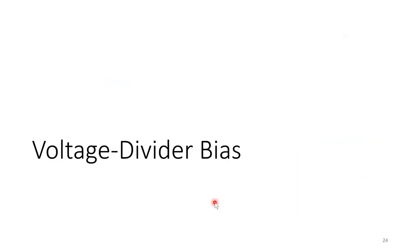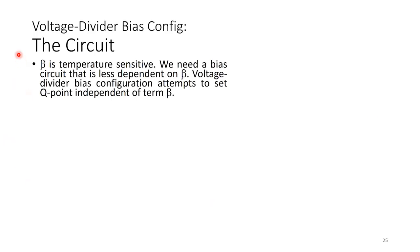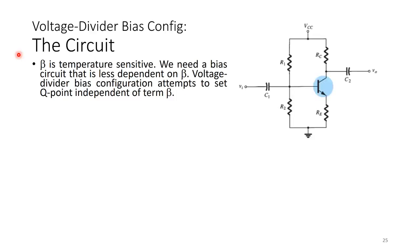Voltage divider bias. Beta is temperature sensitive, and we need a bias circuit that is less dependent on beta. A voltage divider bias configuration attempts further to set the Q point independent of beta. R1 and R2 are connected between VCC and the base terminal, with R2 going from the base terminal to ground. RE still exists here, just like the emitter-stabilized bias.